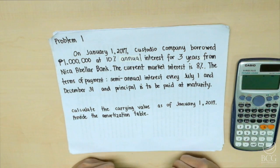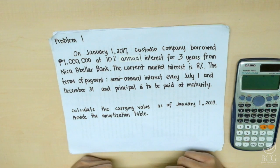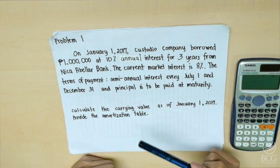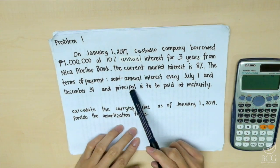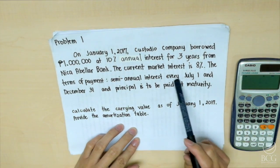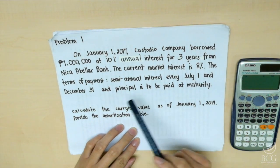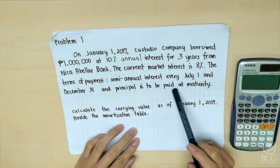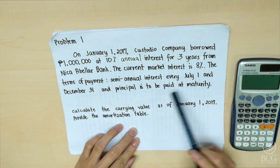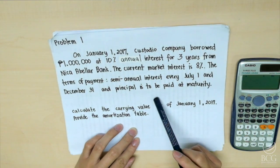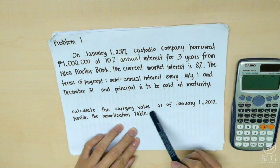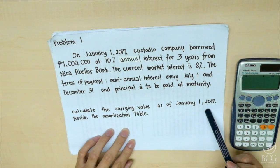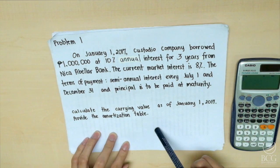Problem 1. On January 1, 2017, Kosojo Company borrowed 1 million at 10% annual interest for 3 years from Nika Abelar Bank. The current market interest is 8%. The terms of payment: semi-annual interest every July 1 and December 31, and principal to be paid at maturity. Calculate the carrying value as of January 1, 2017, and provide the amortization table.